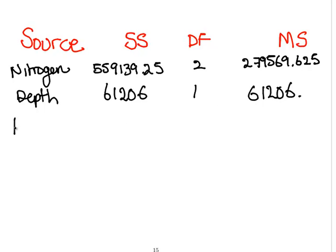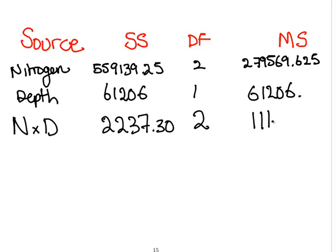Now, interaction, N by D. Previously worked that out to be—this is one we are actually given—2237.3. The degrees of freedom there is 2, so the mean square is 1118.650. Finally, the error.